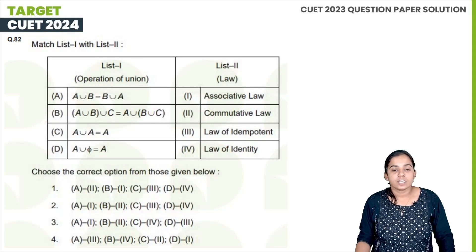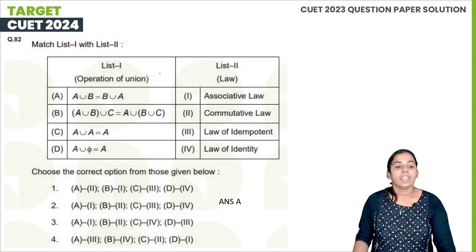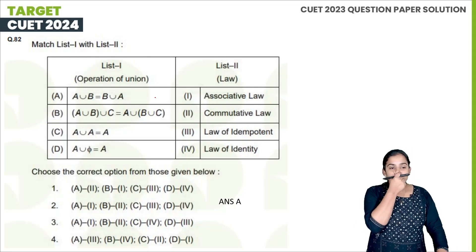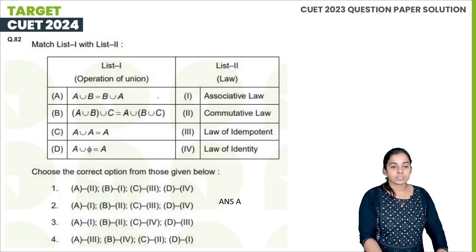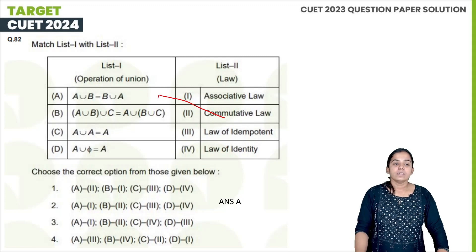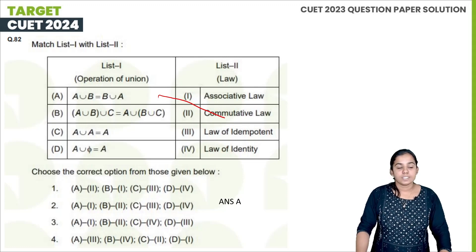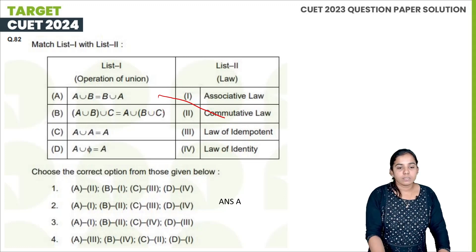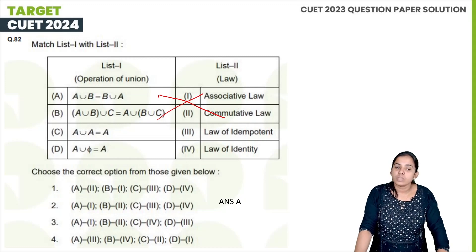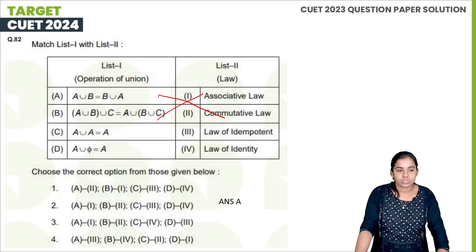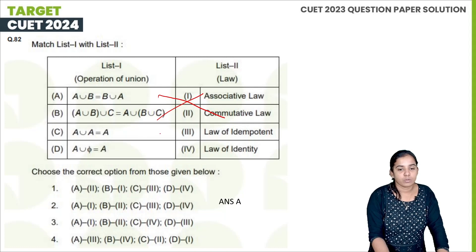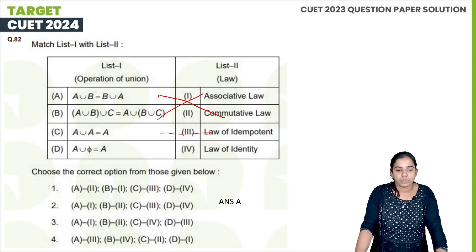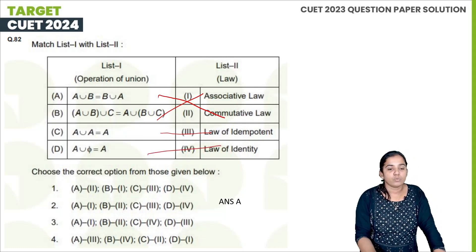A union B = B union A — that is the commutative law. A union B union C is also called commutative. A union (B union C) = (A union B) union C is the associative law. A union A = A is the law of idempotent. And A union empty set = A is the law of identity.